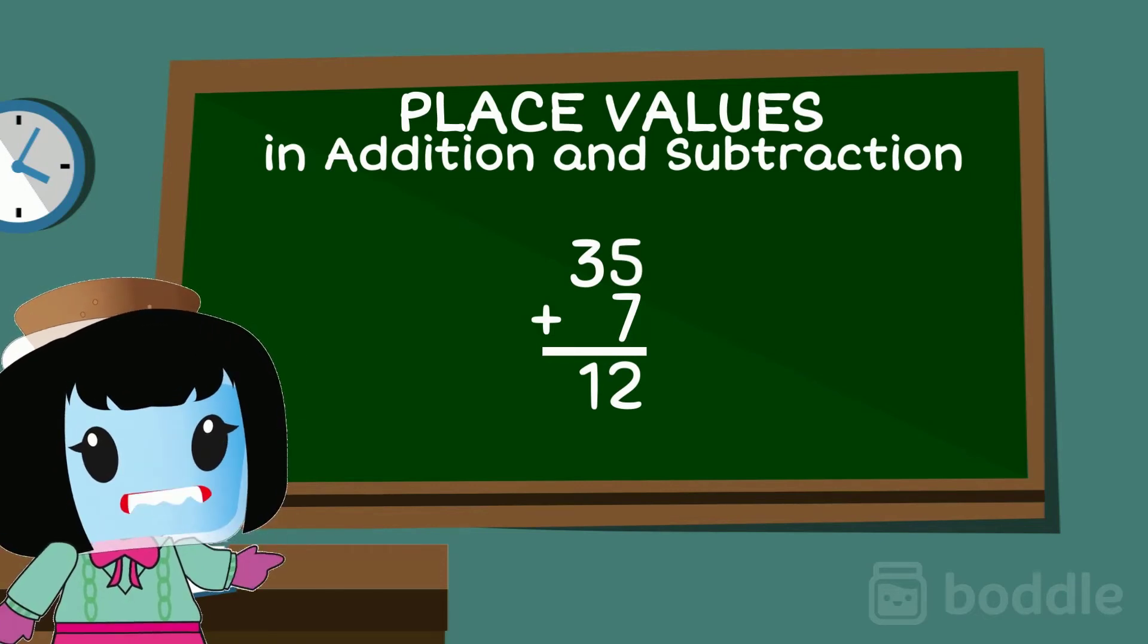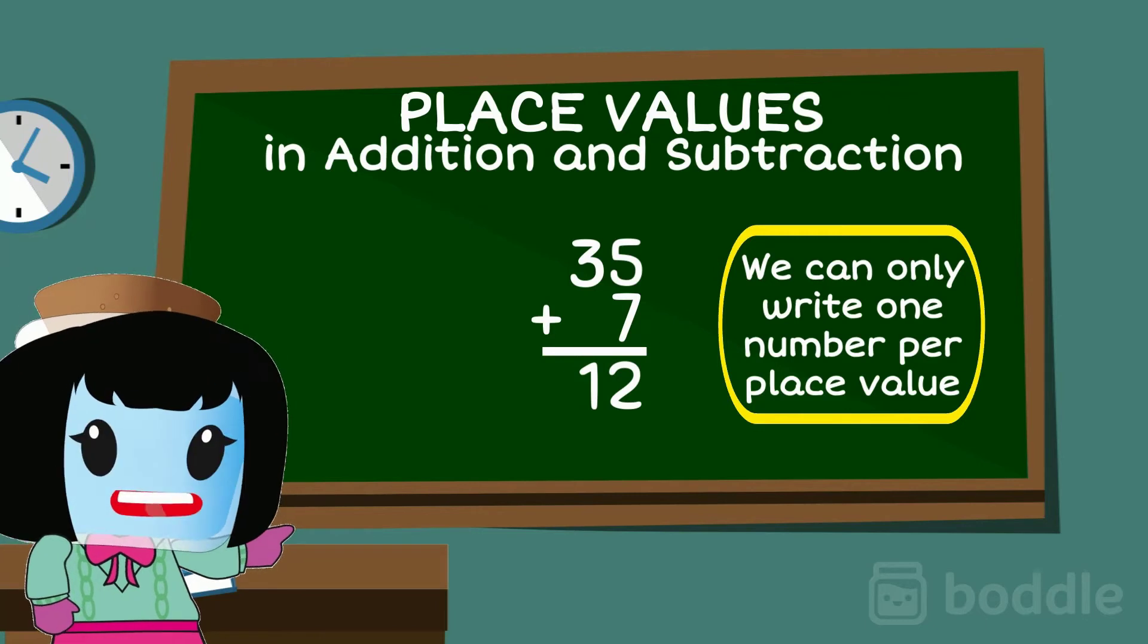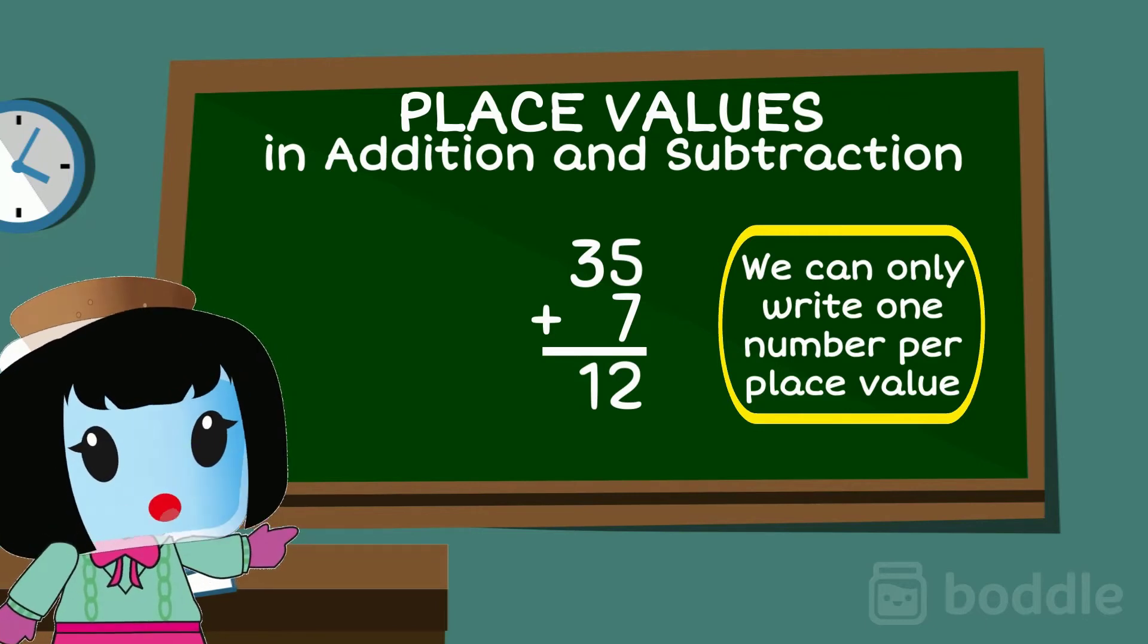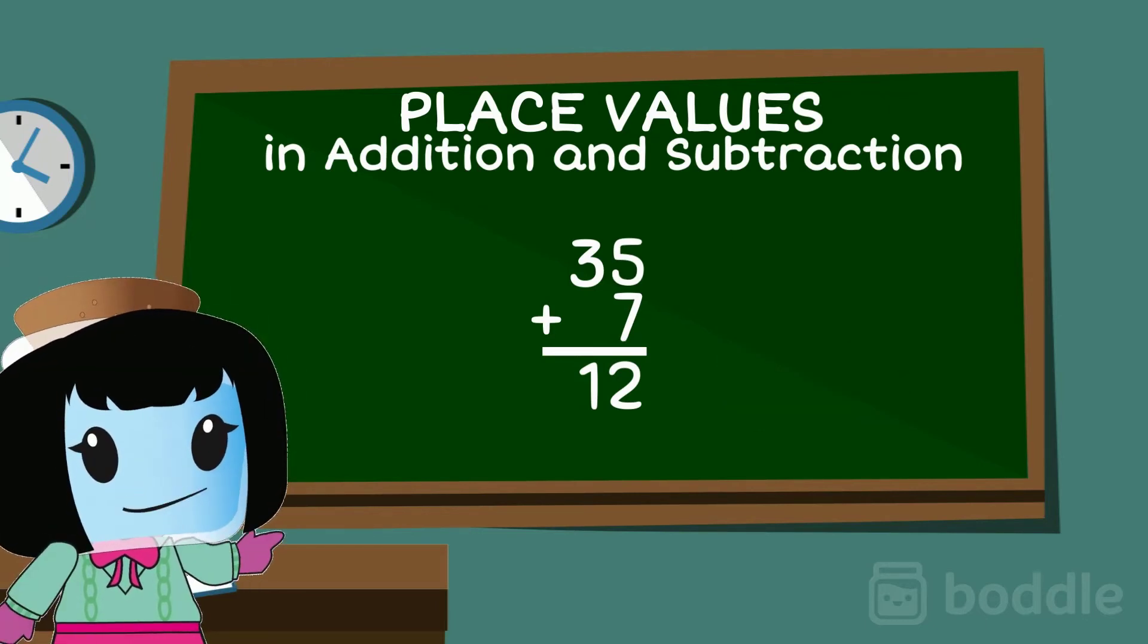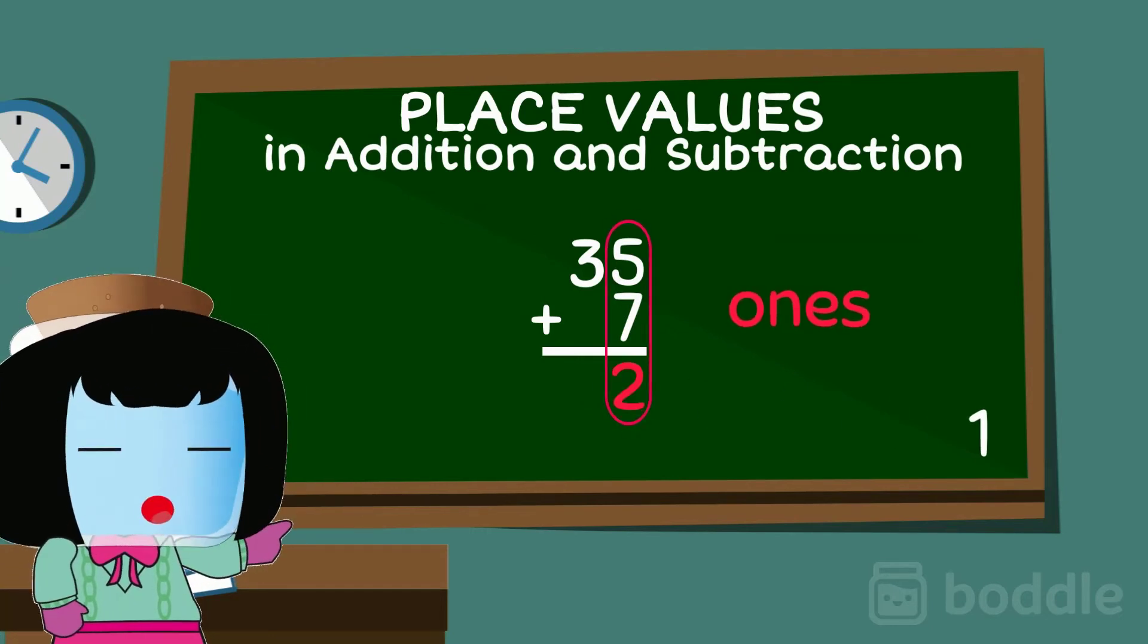But remember, we can only write one number below in each place value. So instead of writing 12, we only write the 2, which is in the ones place.